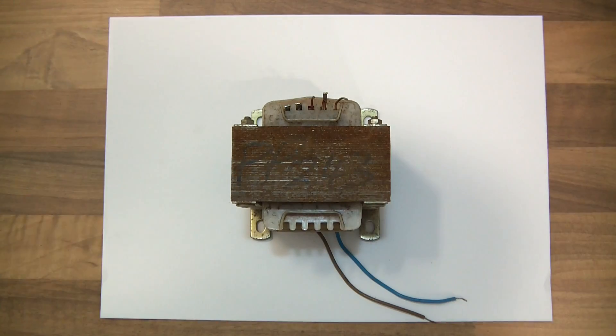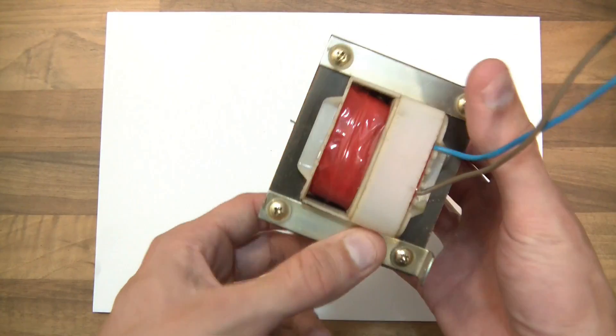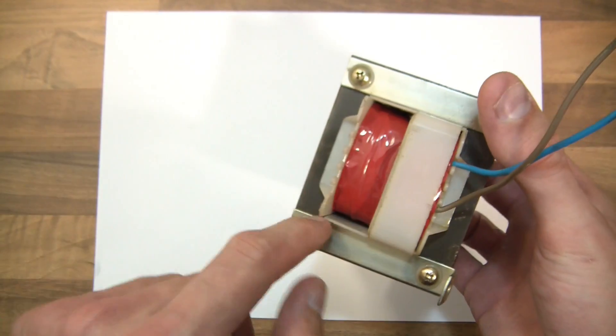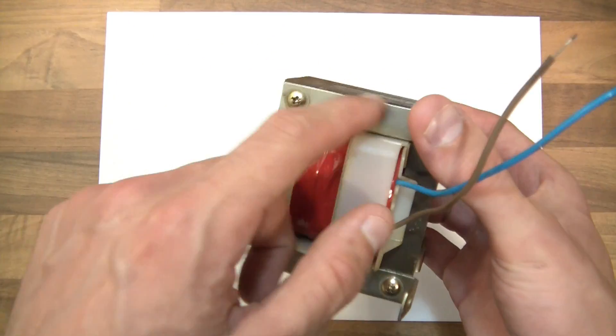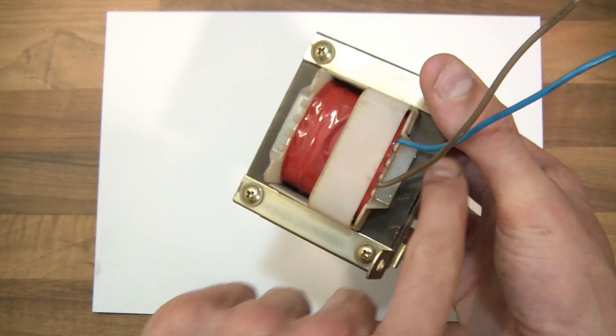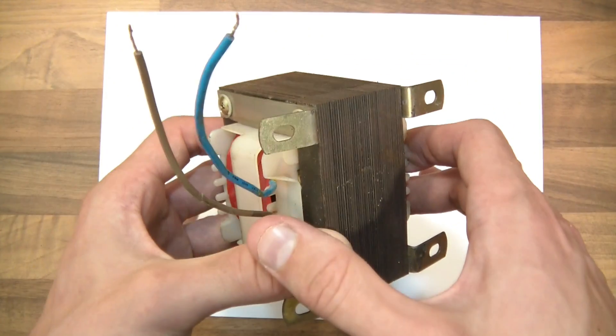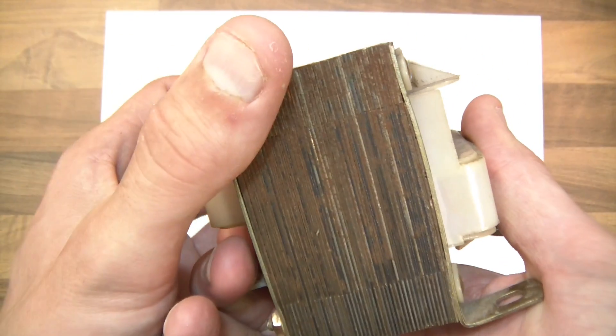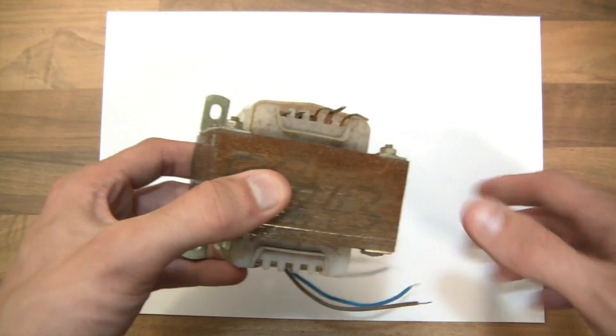To start with, if I have a quick look at this thing, I can tell that it's created using the EI manufacturing process. That's where they have plates in an E shape and plates in an I shape, and they sort of join them together. Basically it makes an iron core. You can see that it's created with little laminated plates and then they're bolted together.